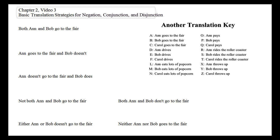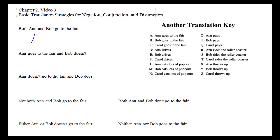Let's start with something fairly simple. We have the sentence: both Ann and Bob go to the fair. Using this translation key here, we can easily translate this simply as A conjunction B. Since conjunction is commutative, we could say B and A as well. Conjunction is always commutative.